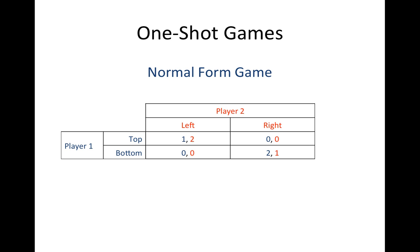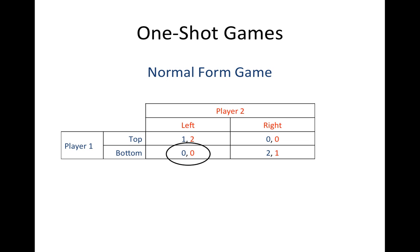By convention, we always list the row player's earnings first and the column player's earnings second. In this table, each player's earnings are also color-coordinated to make it easier to read. In this game, if player 1 plays top and player 2 plays left, then player 1 earns 1 and player 2 earns 2. If player 1 plays top and player 2 plays right, then both players earn 0. If player 1 plays bottom and player 2 plays left, then again both players earn 0.